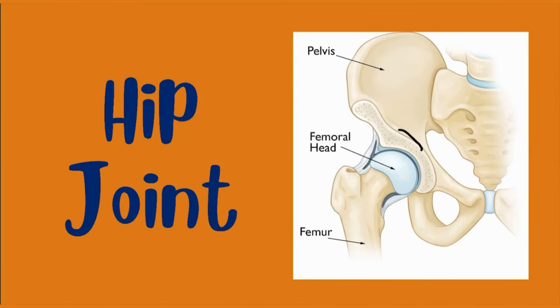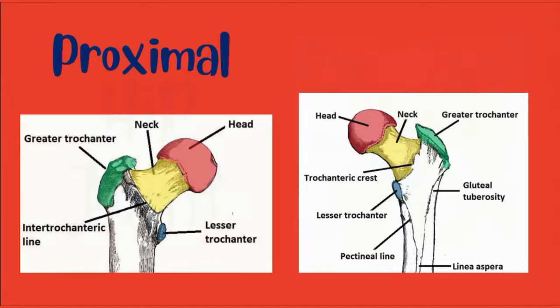First we are going to study about the proximal part of the femur. The proximal part of the femur articulates with the acetabulum of the pelvis to form the hip joint. It consists of the following structures. The head is on the proximal end and has a smooth surface covered with articular cartilage, except for a small depression — the fovea — where the ligamentum teres attaches.